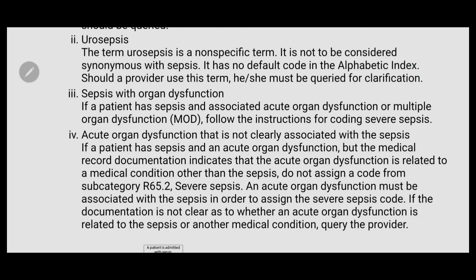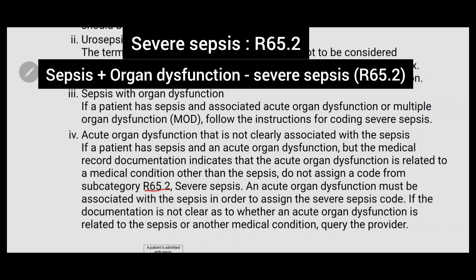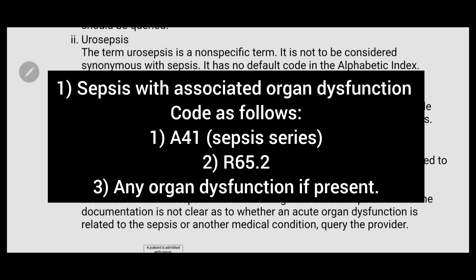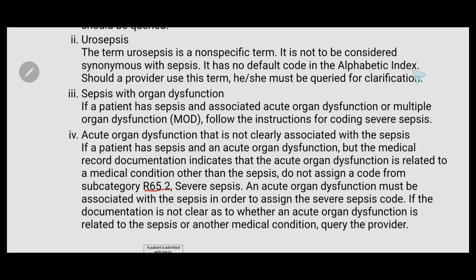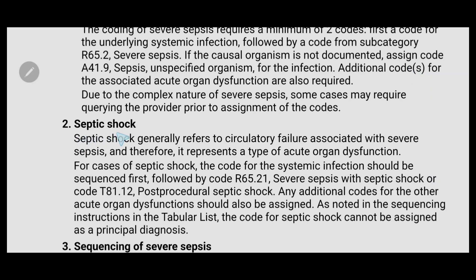The code for severe sepsis is R65.2. If sepsis with related acute organ dysfunction is mentioned, we have to code severe sepsis R65.2. For sepsis with associated organ dysfunction, the first code will be A41, second code will be R65.2 (severe sepsis), and the third code will be any associated organ dysfunction if present. If the acute organ dysfunction is not related to sepsis, we should not code R65.2.